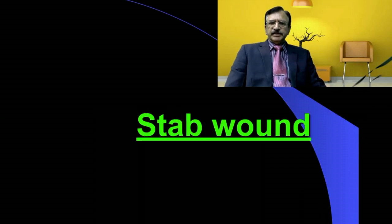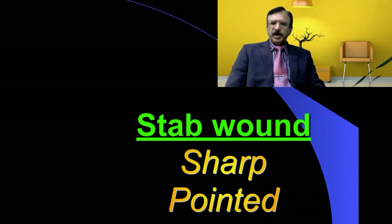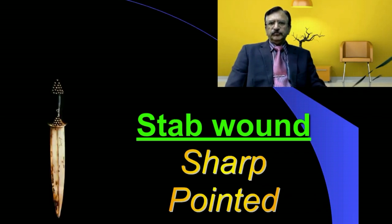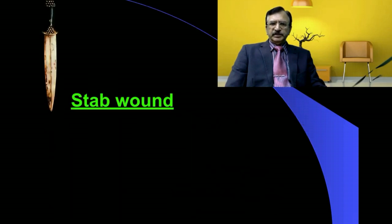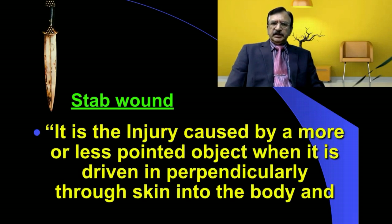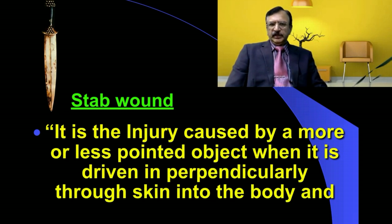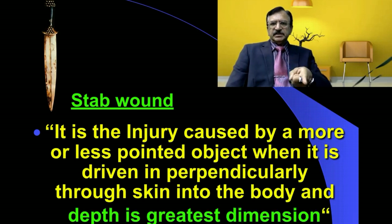Stab wounds are basically the sharp pointed object injuries. The weapons which have a sharp pointed object cause an injury when driven perpendicularly through the skin into the body — that is, a thrusting force pushing the weapon point into the body — and the depth is the greatest dimension, greater than the width.